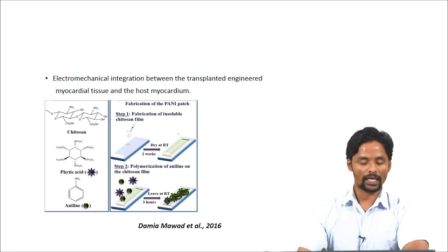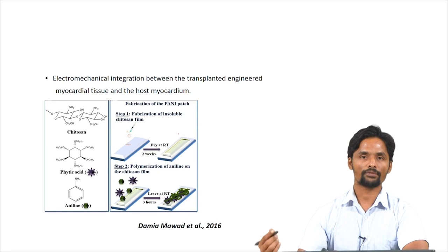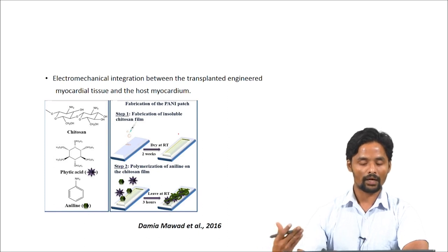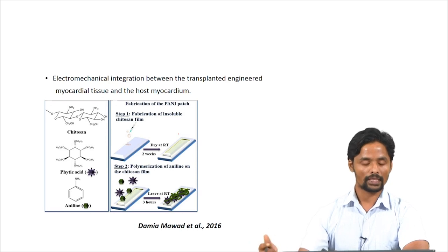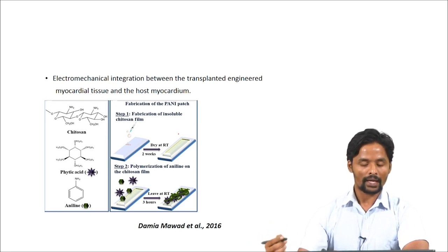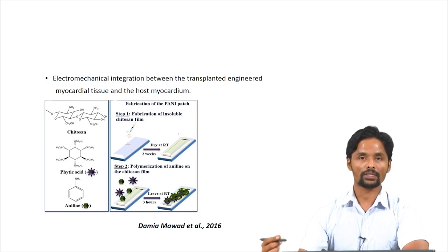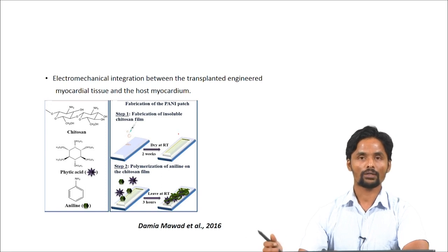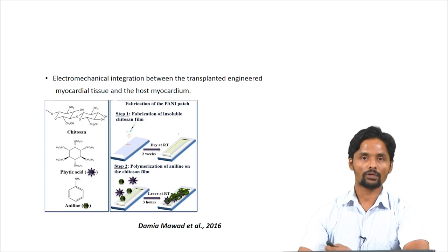In this study, what they did was use chitosan. Chitosan is a source of amine groups, and they fabricated a chitosan film on top of which they polymerized aniline in the presence of phytic acid. The chitosan plays the role of an amine group source, and they tried to solve the problem of deprotonation.